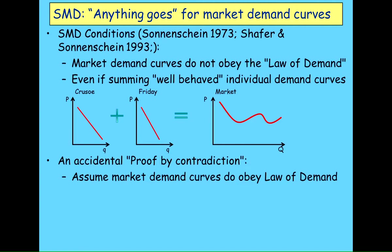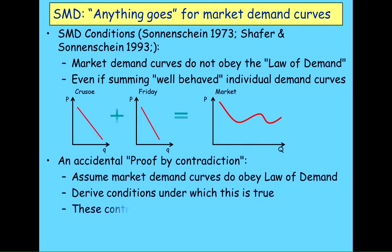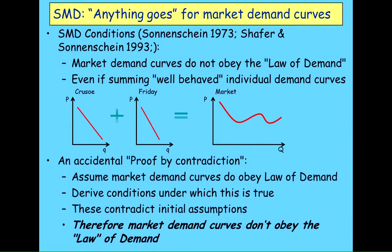Neoclassical economics instead has drowned this result. So how do you go about a proof by contradiction? You assume that market demand curves do obey the law of demand. You derive conditions under which this is true, and you then find those conditions contradict your initial assumptions. So you've therefore proven that they don't obey the law of demand. That's fundamentally what the SMD conditions have done.